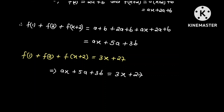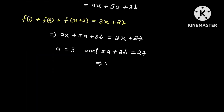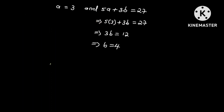Now by comparing the coefficients of x and the constant terms, we have a equal to 3, and 5a plus 3b equal to 27. This implies that 5 times 3 plus 3b equals 27, so 3b equals 12, and therefore b equals 4. And so f of x is equal to 3x plus 4.